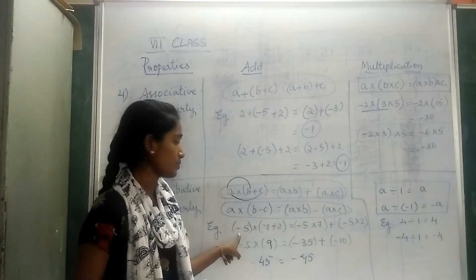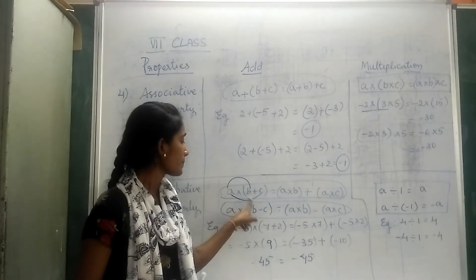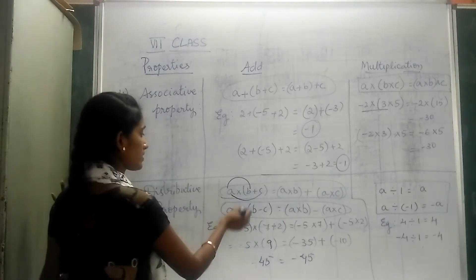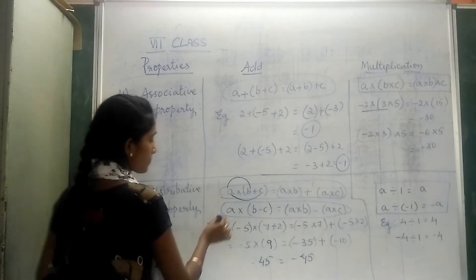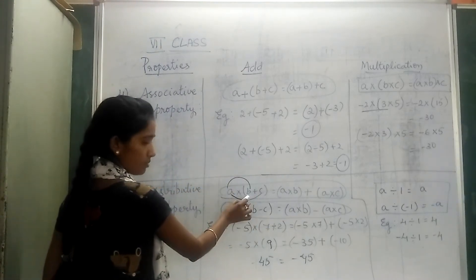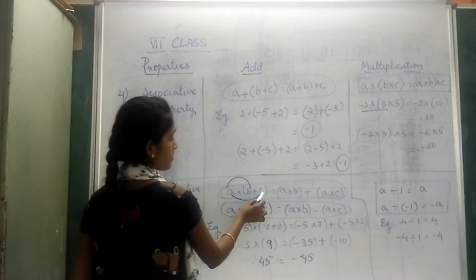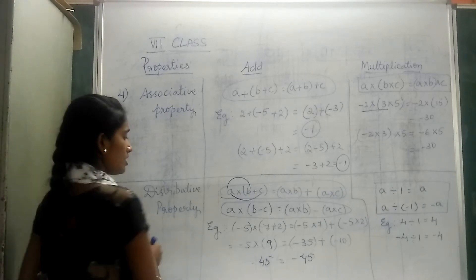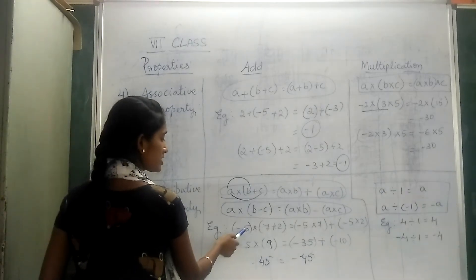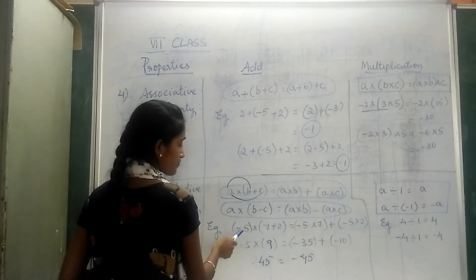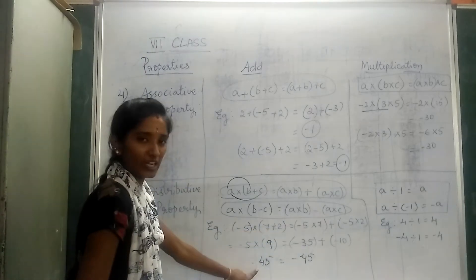I have taken a as -5, b as 7, c as 2. First we will write according to the property. This again a × b: a can be multiplied with b, as well as a can be multiplied with c. But only the addition sign will change. So, I multiplied -5. First we will take out this bracket: 7 + 2 = 9. -5 × 9 = -45.